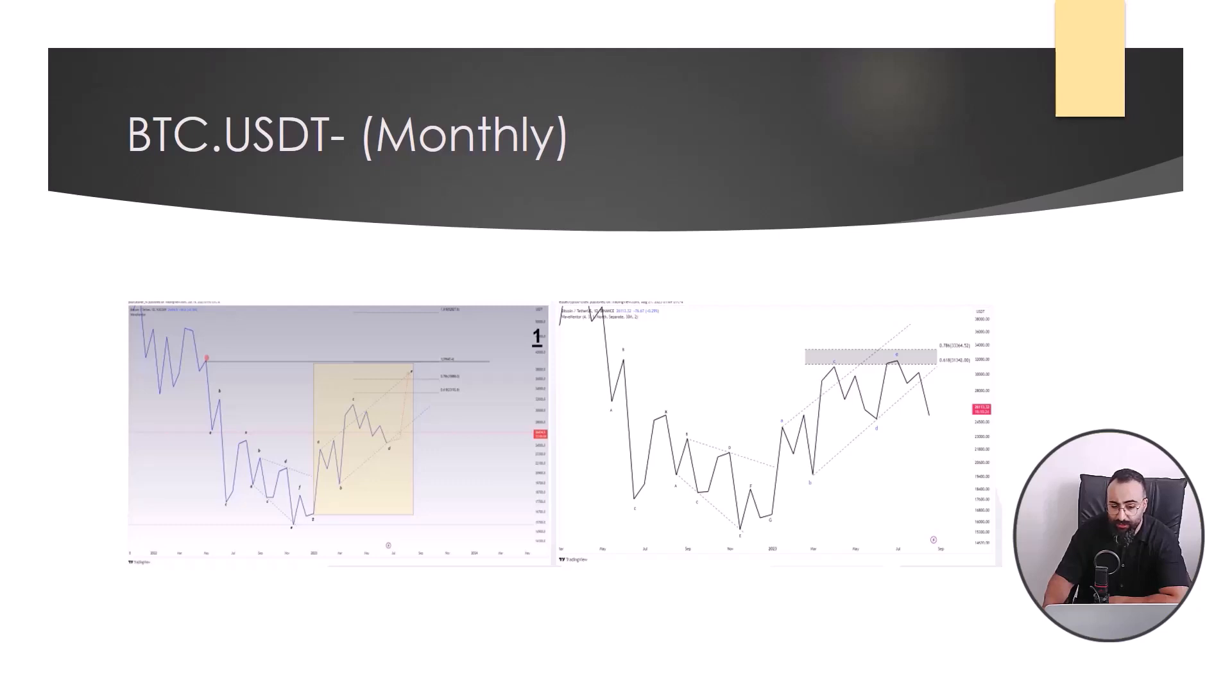Due to the fact that the structure of wave E was not formed, the extension of wave E was considered ideal targets. The price in wave E of this triangle was able to reach the level of $24,850 to $31,800 as an upward movement due to the completion of the triangle structure. The price is expected to experience further drop by crossing $24,800.